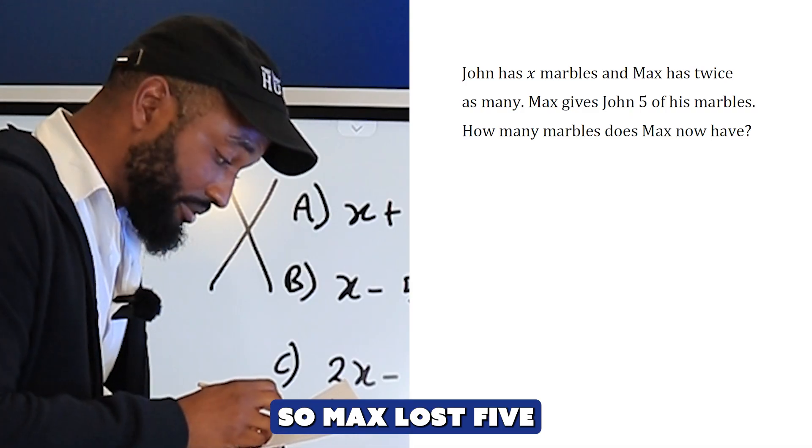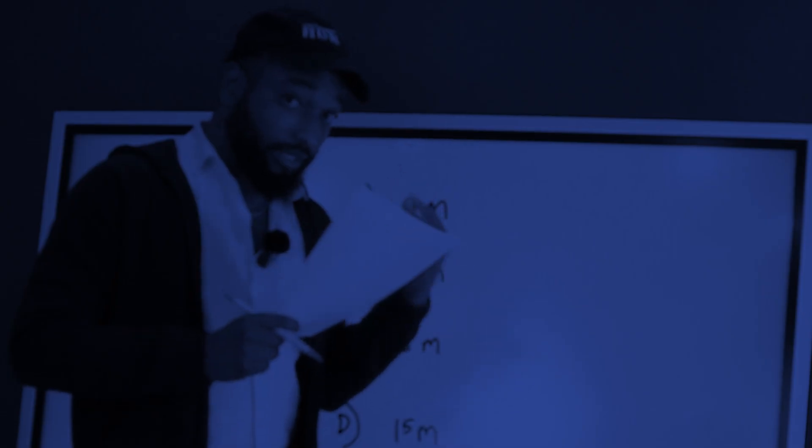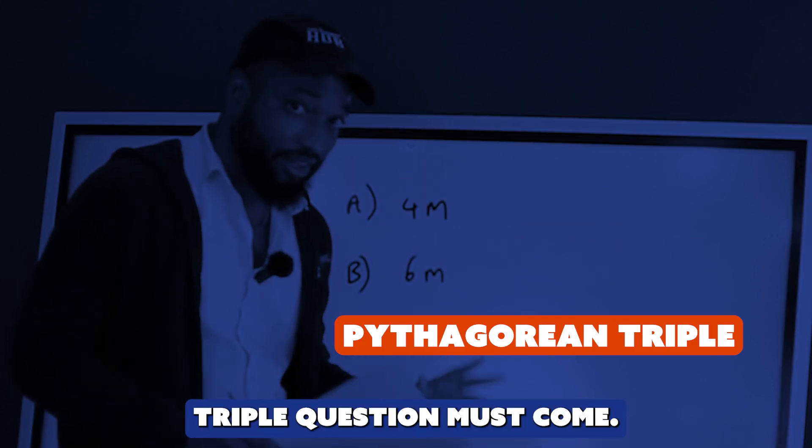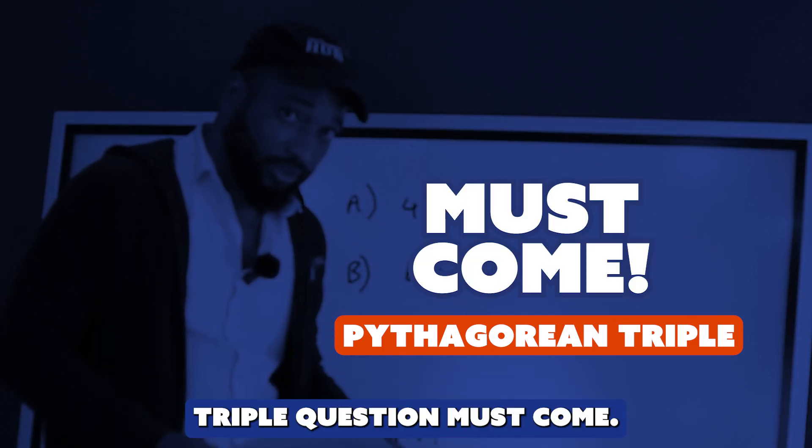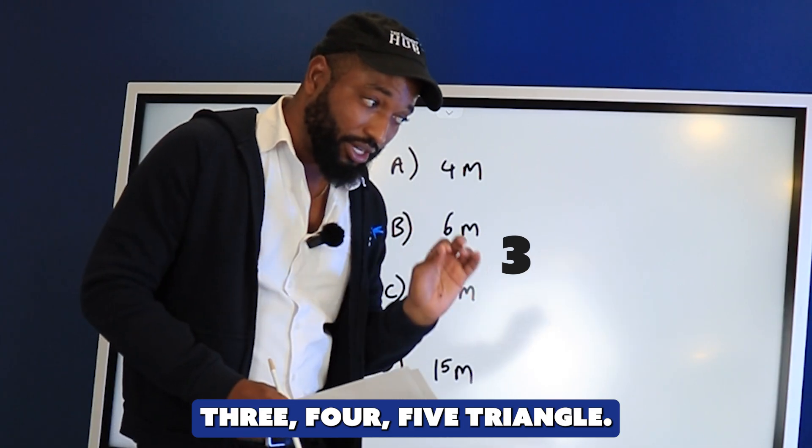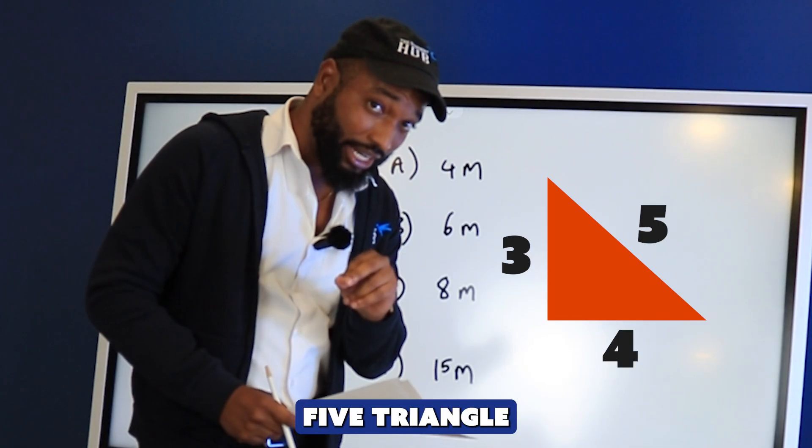Some form of this Pythagorean triple question must come. Just memorize the 3-4-5 triangle. There are other types of triangles, but let's see that 3-4-5 triangle.